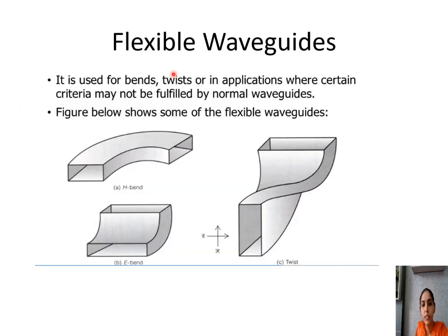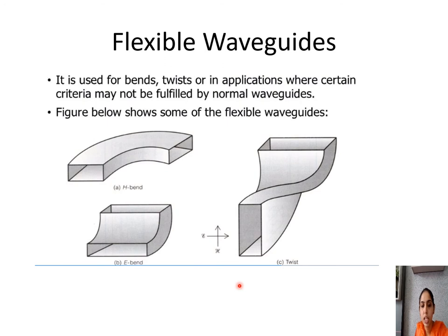We have been considering rigid waveguides, but in certain applications it becomes necessary to change the direction of a guide by an arbitrary angle. So in some cases we use flexible waveguides in the form of bends, twists, corners, etc. This figure shows examples of flexible waveguides such as H-bend, E-bend, and twist, which are used for arbitrarily adjusting or changing the direction of a waveguide.